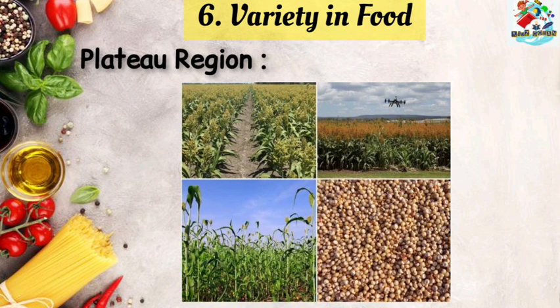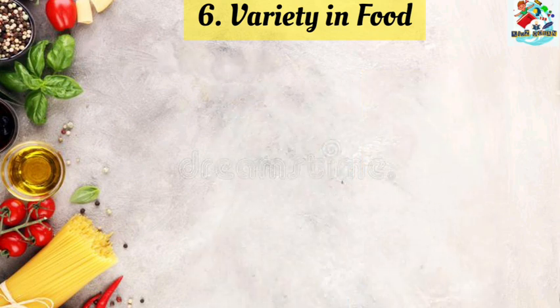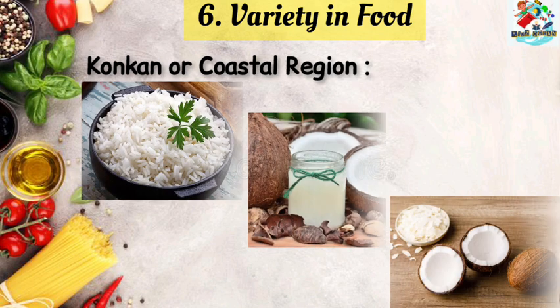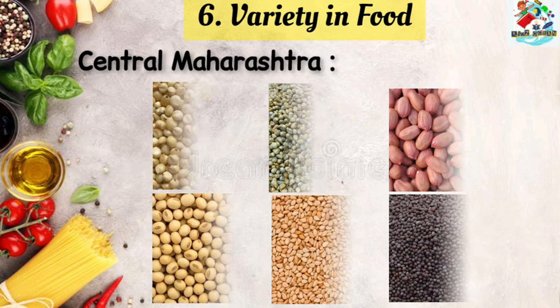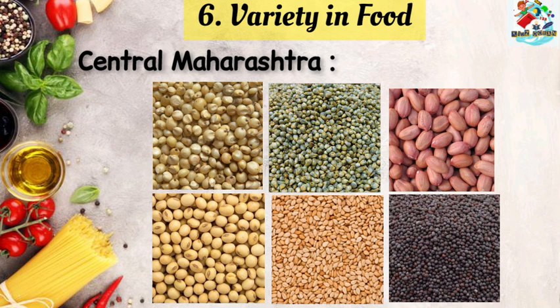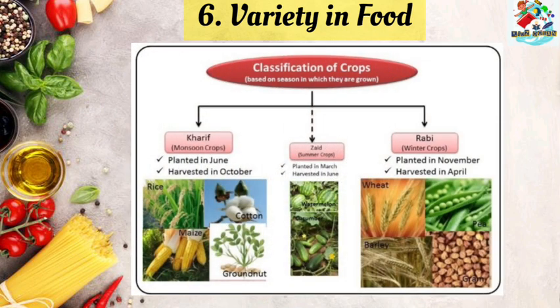The main crop grown in any region is used to make various items in that region. For example, jowar is grown on a large scale in the plateau region of Maharashtra, so urda, bakri, papad, ambil etc. are all preparations of jowar enjoyed in that region. In Konkan or the coastal region, rice, coconut and coconut oil are widely used. In central Maharashtra, jowar, bajra, groundnuts, soya bean, sesame and mustard are more commonly used. This variety in crops is due to the change in climate and soil. The crops grown in a region determine the diet of the people in that region.